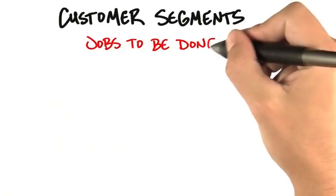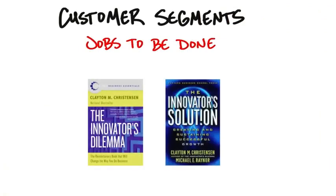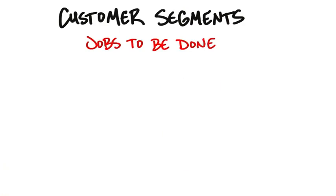Now, this phrase, jobs to be done, was first popularized by Clayton Christensen who wrote a series of books, The Innovator's Dilemma and The Innovator's Solution. It should probably be on any entrepreneur's reading list. And what Christensen said is,